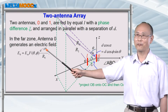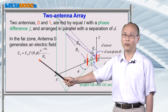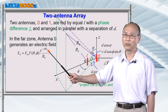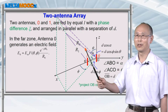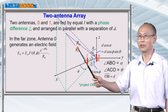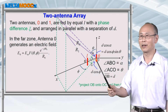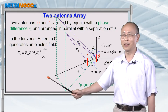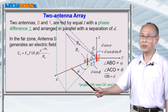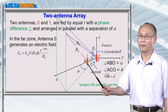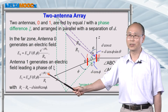In the far field for antenna 0, you can write down this formula, where you see the typical term exponential minus j beta r0 divided by r0, where r0 is the distance between the point of interest and the antenna. You also see the antenna pattern function in this expression. Similarly, you can write down a formula for antenna 1, where you replace r0 with r1.